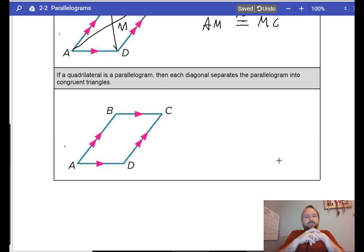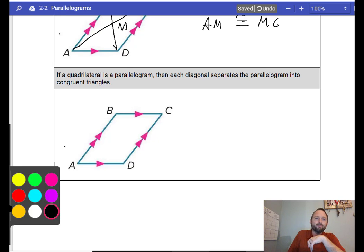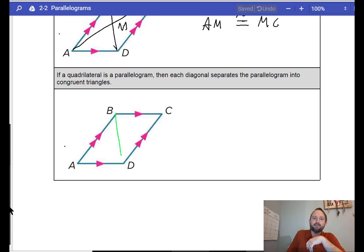If a quadrilateral is a parallelogram, then each diagonal separates the parallelogram into congruent triangles. So, this one, triangle ABD would be congruent to this. So, let's write this down. Triangle ABD. Now, we're starting here going up the double, going the middle, and then the single. So, we're going to start at, it's congruent to triangle, start at the C. C, go up the double. D, B. There you go. Well, that's one.